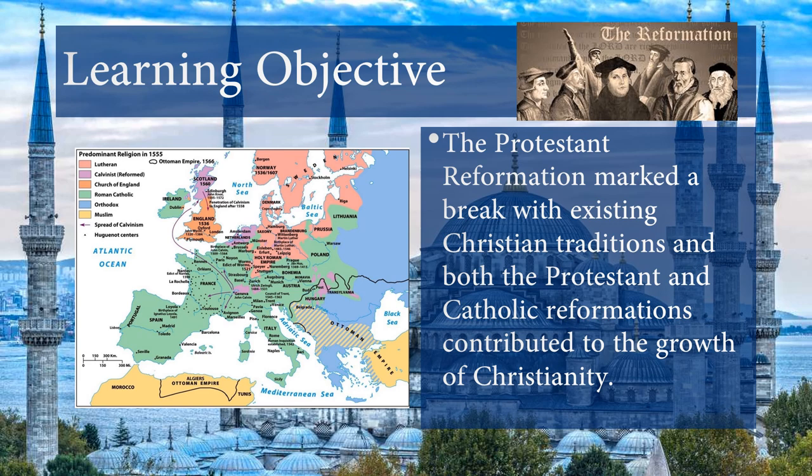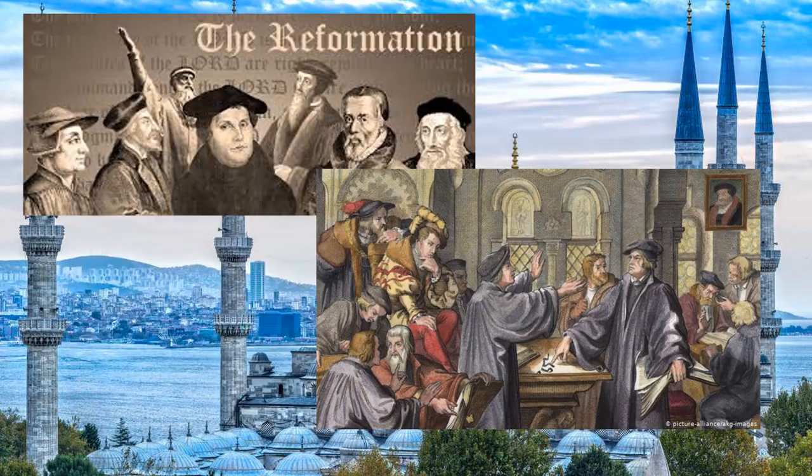The Reformation also affected the Catholic Church — they stopped the sale of indulgences, created new orders such as the Jesuits, increased missionary activity, launched a Counter-Reformation, and created the Inquisition to punish heretics. While all this was happening, Europe was discovering the Americas, and as they colonized parts of the Americas, Africa, and the Indian Ocean region, they spread their form of Christianity — Catholic or Protestant — around the globe.